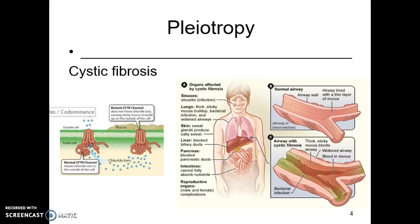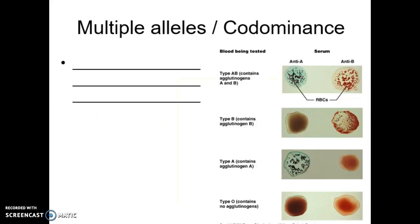Another extension is what's called multiple alleles or codominance. I'm going to work a problem over this — you guys will need to know how to do these, so definitely go to the other lecture where it talks about working genetic problems. With a multiple allele scenario or codominance, there are more than two alleles for a gene within the population. The only example I want you to know for this course is blood typing.